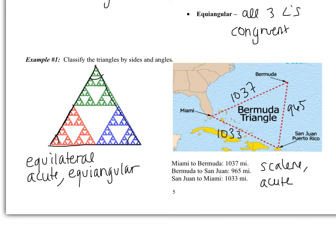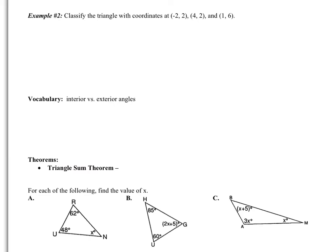Moving on to Example 2: classify the triangle with given coordinates. I'm going to sketch the triangle and label it A, B, C. A is the point (−2, 2), B is the point (4, 2), and C is the point (1, 6). In order to classify by sides, I need to know the three side lengths, so I need to use the distance formula.